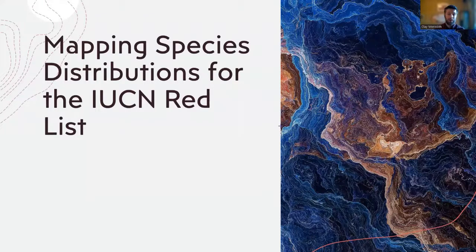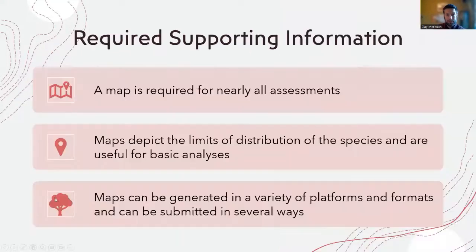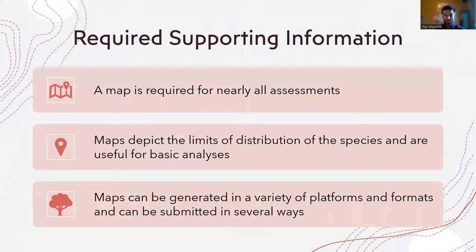Maps are now required supporting information for assessments submitted to the Red List Unit. They're a key component of all IUCN Red List assessments and required for nearly all submitted assessments. The exception is for species listed as data deficient for which distribution is unknown — for example, a species known only from a type specimen with no associated location data, or where genetic data suggests a species exists but we don't know precisely where it occurs. In those instances, a map is not required.